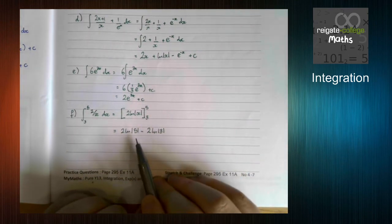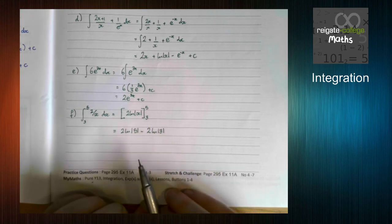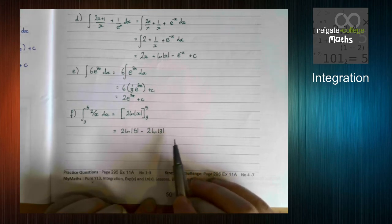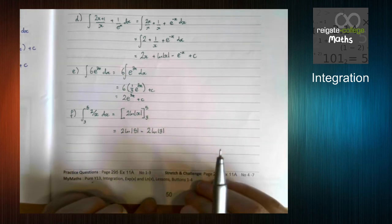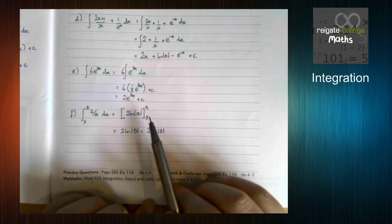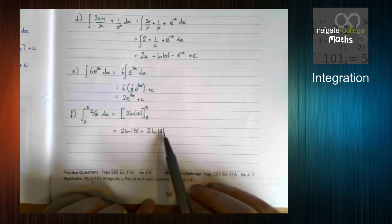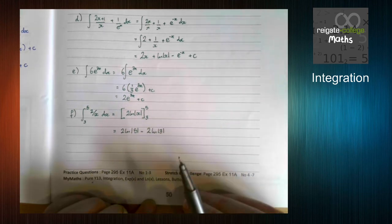Now, at this stage, we probably don't need the modulus signs, because the modulus of 5 is 5, and the modulus of 3 is 3. So we can scrap those now. They're irrelevant. They're useful if we were integrating, say, between minus 3 and 5. Then this would become minus 3.